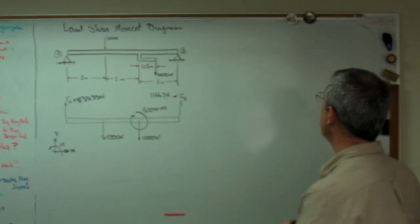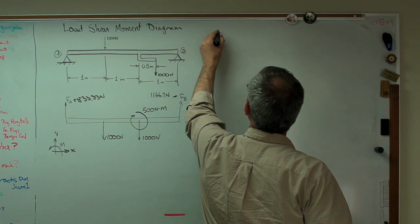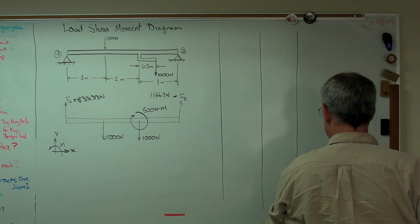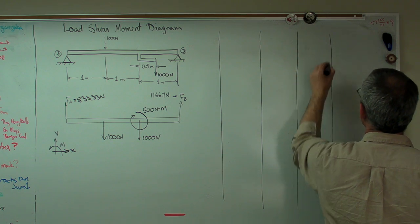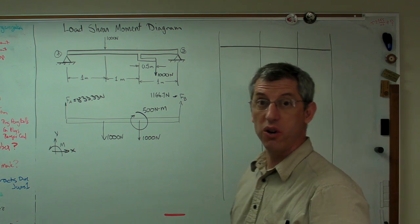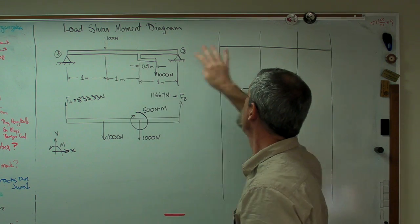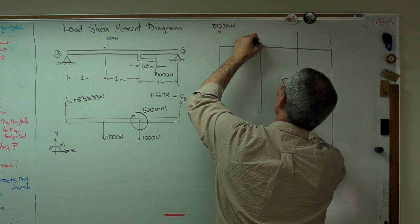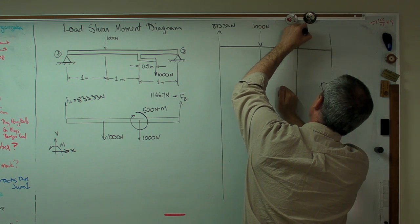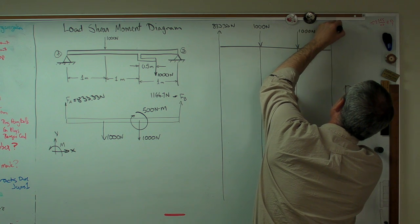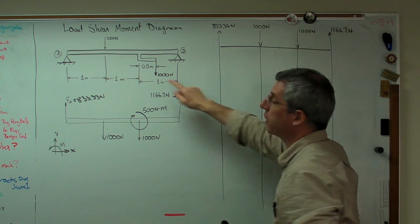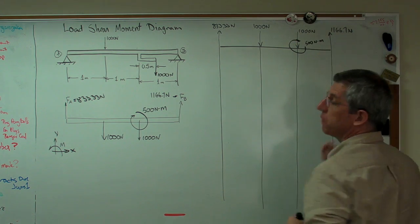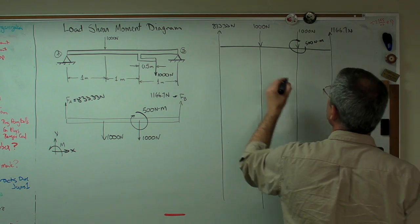Load shear moment diagram. We're going to need one, two, three, four lines. So let's start with the loads. Loads are easy. All we're doing is taking information from the initial drawing and transcribing it over to here. So 833.33 newtons, 1,000 newtons, 1,000 newtons, 1166.7 newtons, and don't forget the moment. The moment has to be there. The beam knows it's there. It's 500 newton meters, so we're good to go. That's the load part.